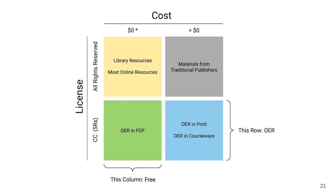So things in the first column are free and things in the bottom row are open educational resources. There is a place where those two things overlap. But not all open educational resources are free, and not everything that is free is an open educational resource.